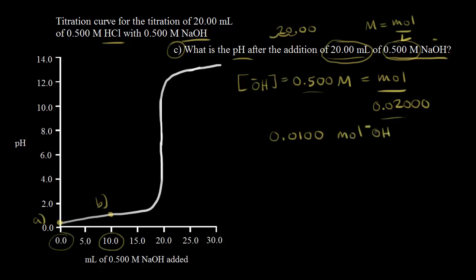So that's how many moles of hydroxide ions we're adding to our original acid solution. In the previous video, we already calculated the moles of hydronium ions in solution, and it was the same number: 0.0100 moles of H₃O⁺. It's the same calculation — 20 mL at 0.500 molar — giving us the moles of hydronium, or equivalently moles of H⁺.